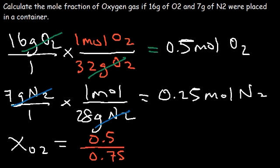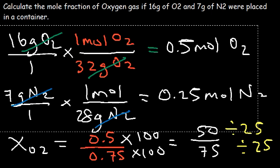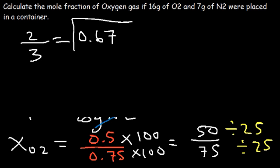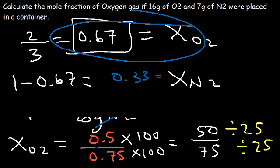To simplify 0.5 over 0.75 without a calculator, multiply top and bottom by 100 to get 50 over 75. Both numbers are divisible by 25: 50 divided by 25 is 2, and 75 divided by 25 is 3, giving two-thirds, which is approximately 0.67. That's the mole fraction of O2. The mole fraction of N2 is 1 minus 0.67, which equals 0.33.